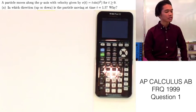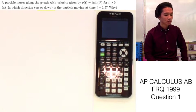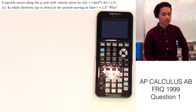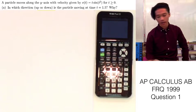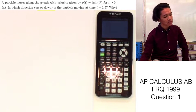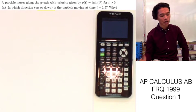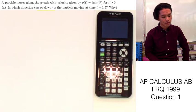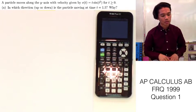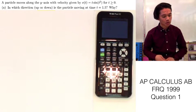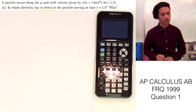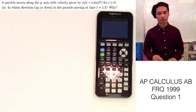Alright, so let's go ahead and answer Question 1 from the 1999 AP Calculus test. The problem says a particle moves along the y-axis with velocity given by v of t equals t sine of t squared, for t greater than or equal to 0.